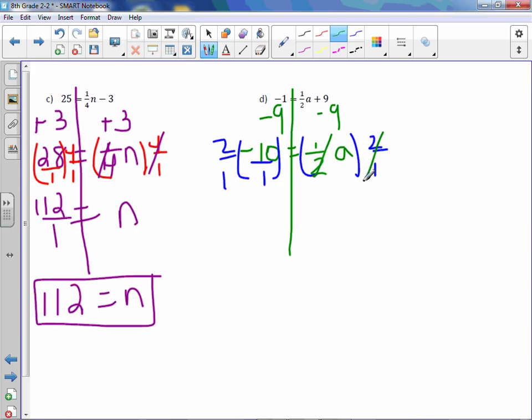These cancel, leaving us with A on the right-hand side. 2 times negative 10 is negative 20 over 1. And negative 20 over 1 is just negative 20.